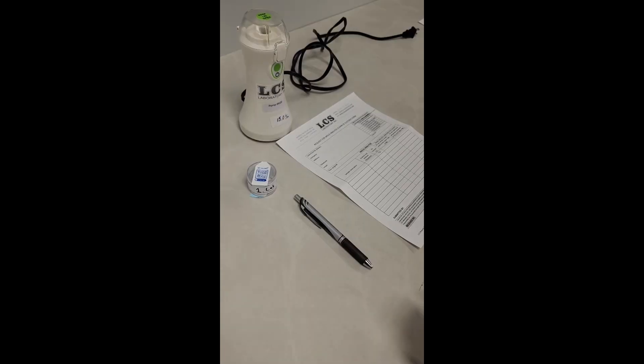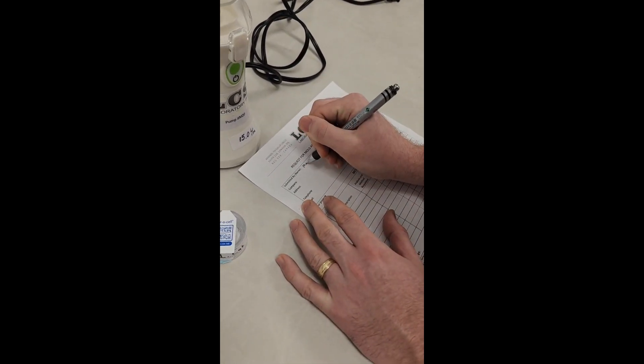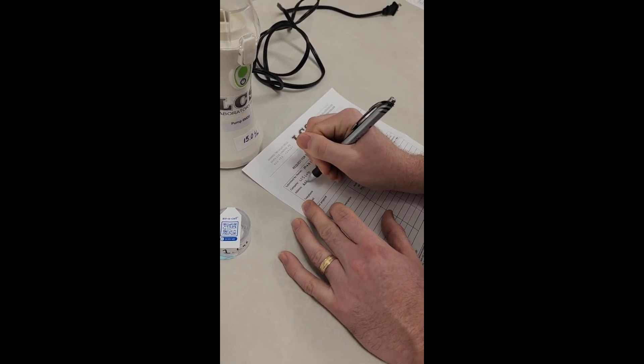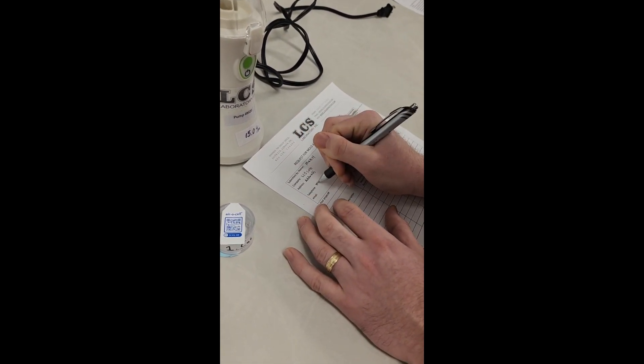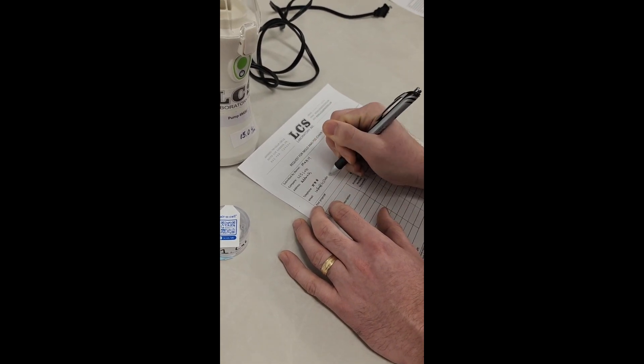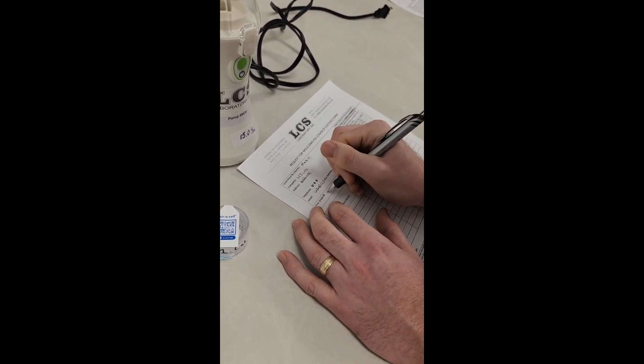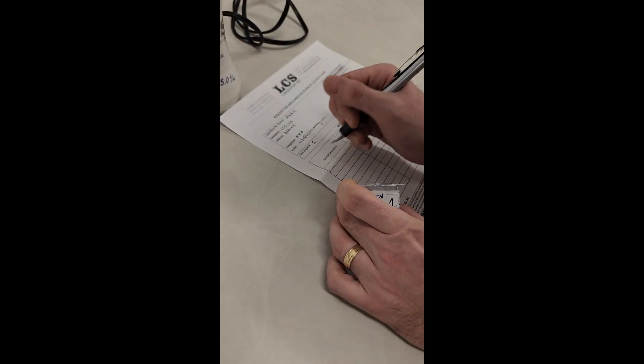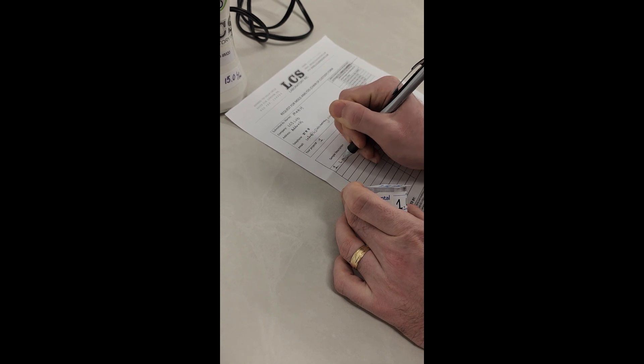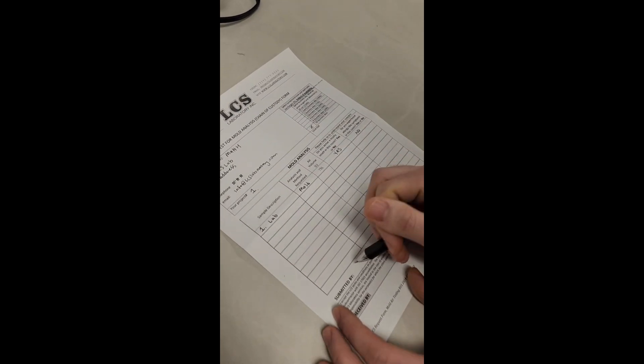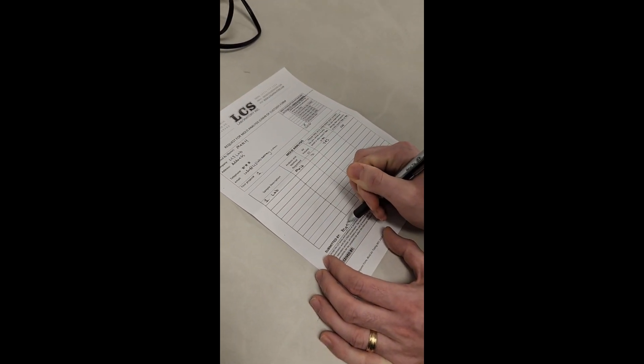Once all cassettes are labeled, begin filling out the test request form. Make sure to include your name, phone number, email, and a project number if applicable. Next, in the sample description area, put the information for each cassette you used for sampling and answer the questions in the table. Choose a turnaround time for your samples and sign and date the form.